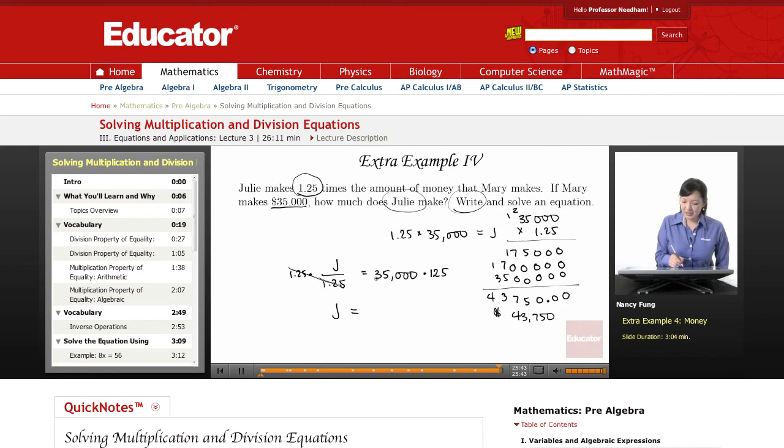And here you can see, luckily, we've already done the multiplication. 35,000 times 1.25. And our answer is, when we multiply, 43,750.